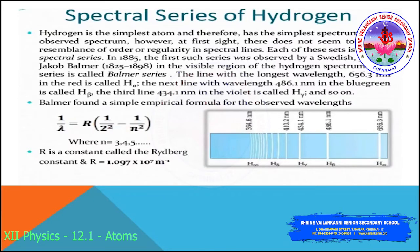However, the spacing between lines within certain sets of the hydrogen spectrum decreases in a regular way — each of these sets is called a spectral series. The Swedish teacher Johann Jacob Balmer first observed this in the visible region of the hydrogen spectrum, giving us the Balmer series. The longest wavelength line is 656 nm (red, H-alpha), the next is 486 nm (blue-green, H-beta), and the third is 434 nm (violet, H-gamma).